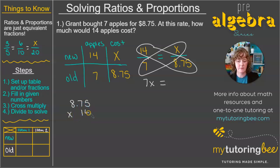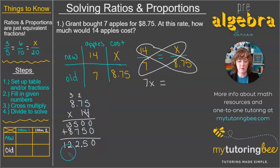8.75 times 14. 4 times 5 is 20. 4 times 7 is 28, plus 2 more is 30. 4 times 8 is 32, plus 3 more is 35. And then we've got 1 times 5 is 5, 1 times 7 is 7, 1 times 8 is 8. Now when we add that up, we're going to drop that decimal in two spaces from the right since we have two decimals in our problem. So we get 122.50.